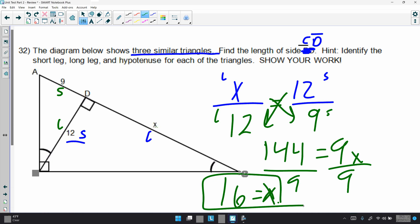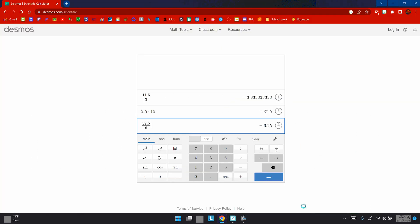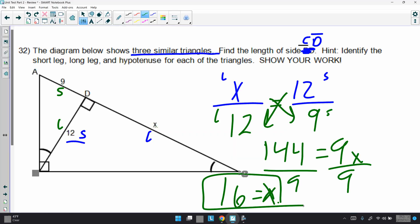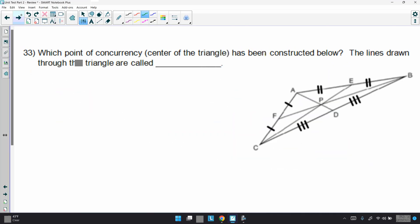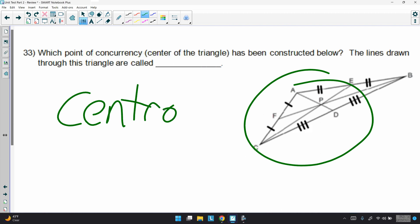Which point of concurrency, right here, center of the triangle, has been constructed below? And also, this is the centroid. It's the center of gravity for a triangle. The lines drawn through the triangle are called, we've had this word before, medians. All right, that's it for study. Catch you later. Bye-bye.